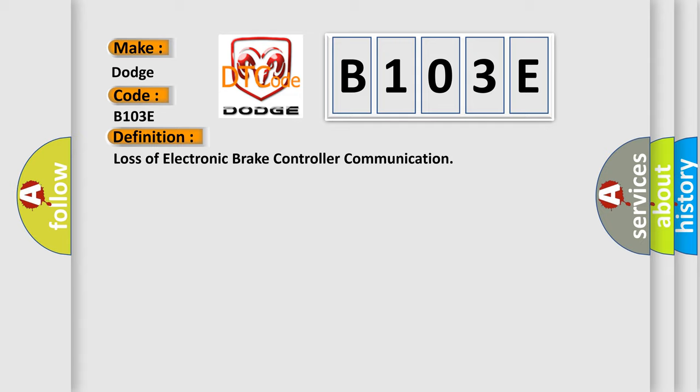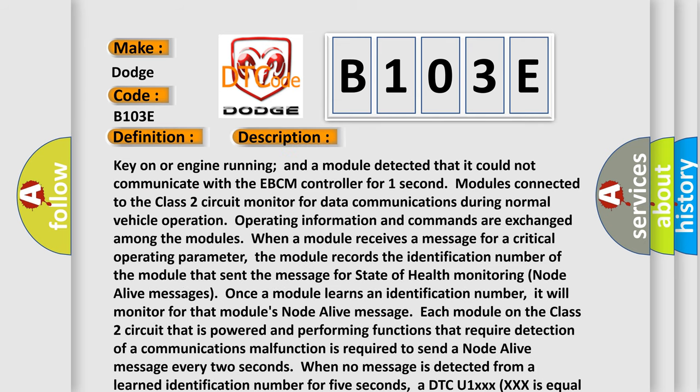Here is a short description of this DTC code. Key on or engine running and a module detected that it could not communicate with the EBCM controller for one second. Modules connected to the class 2 circuit monitor for data communications during normal vehicle operation. Operating information and commands are exchanged among the modules. When a module receives a message for a critical operating parameter, the module records the identification number of the module that sent the message. For state of health monitoring, node alive messages are used — once a module learns an identification number, it will monitor for that module's node alive message. Each module on the class 2 circuit that is powered and performing functions requiring detection of a communications malfunction must send a node alive message every two seconds. When no message is detected from a learned identification number for five seconds, a DTC U1XXXXX — equal to the three-digit identification number — is set.